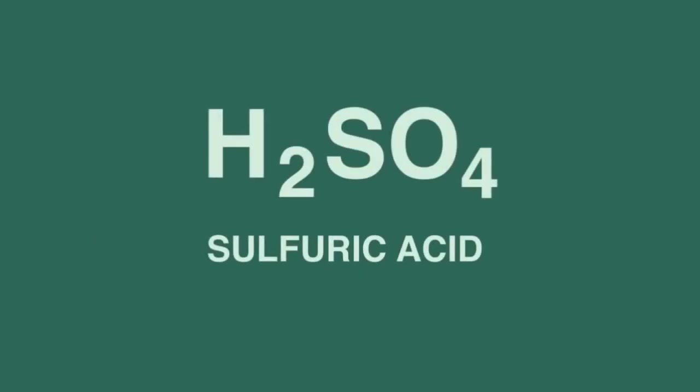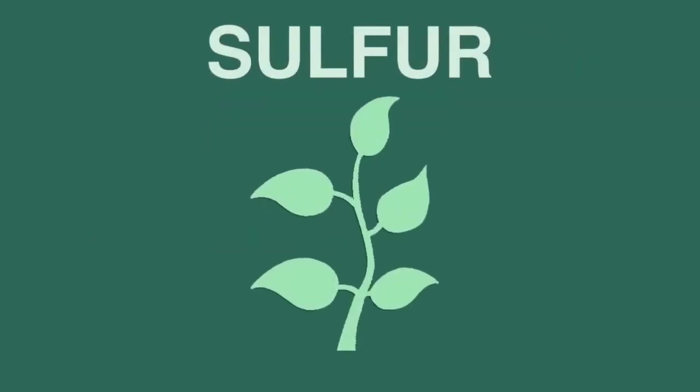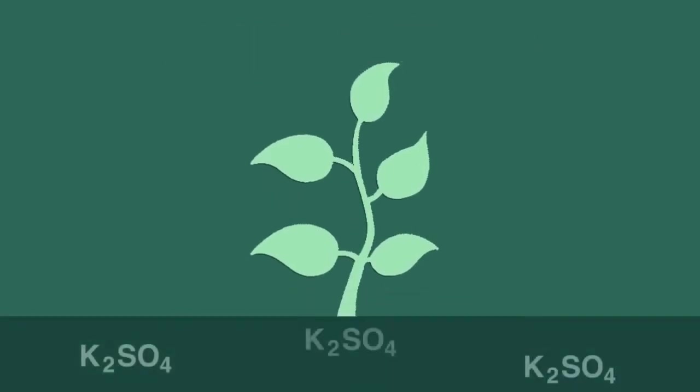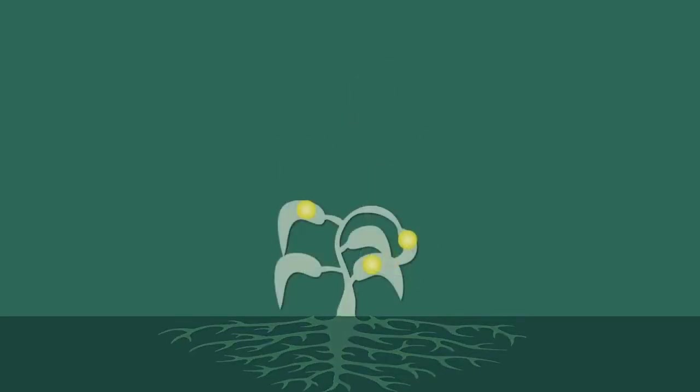We'll consider sulfuric acid first. Plants need a little sulfur to grow. They obtain it from sulfate, for example potassium sulfate, found naturally in the soil. The sulfates are taken up by the plant's roots, and sulfur atoms become bonded to carbon atoms in the leaves' proteins. When plants die and eventually form coal and oil over millions of years, these sulfur atoms remain bonded to the carbon atoms. The sulfur content of coal and oil is usually between 1 and 4% by weight.